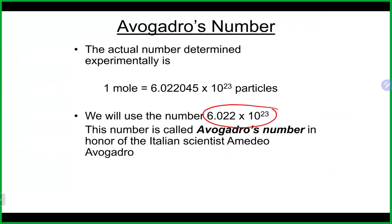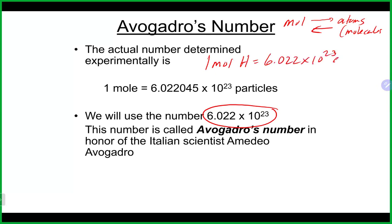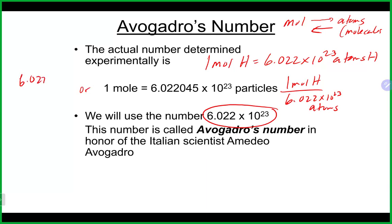Avogadro's number is the conversion factor to go from moles to atoms or molecules, and back. For example, one mole of hydrogen has 6.022 × 10²³ atoms of hydrogen. You can write two conversion factors: one mole of hydrogen over 6.022 × 10²³ atoms, or flip it — 6.022 × 10²³ atoms over one mole. Like any conversion factor, you pick the one you need.